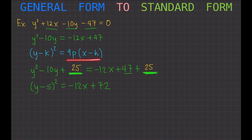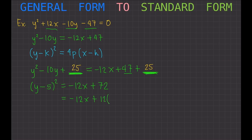The next step is to factor out the negative 12 on the right-hand side, because we want the form 4p times x minus h. We know that 12 is a factor of 72, since 72 equals 12 times 6. So we factor out negative 12 from the right side.